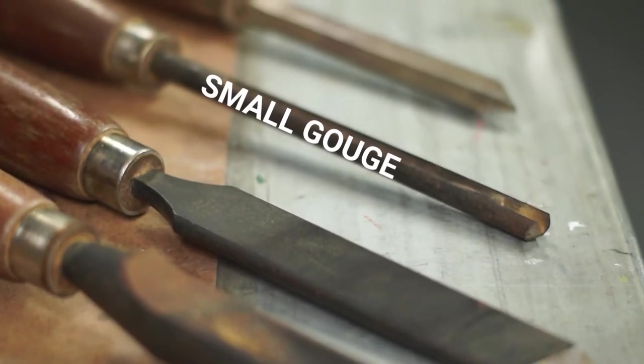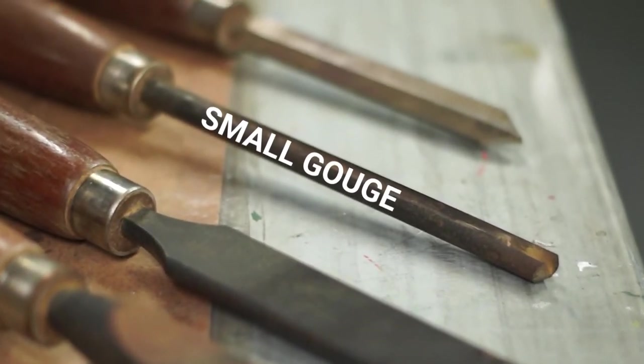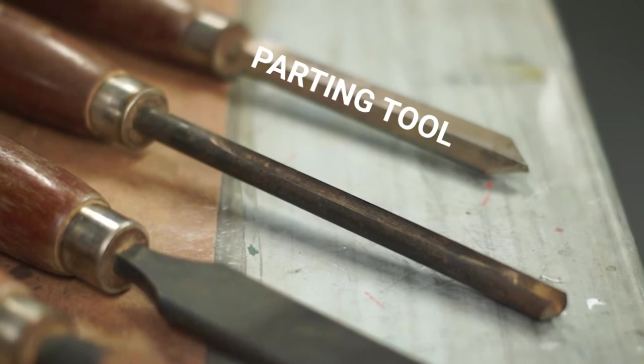I've used a roughing gouge, a skew chisel, a small roughing gouge, and a parting tool.